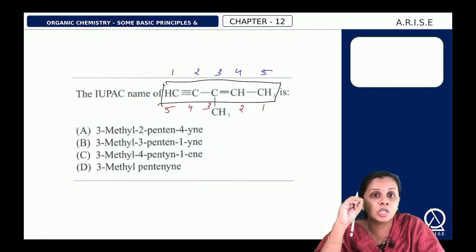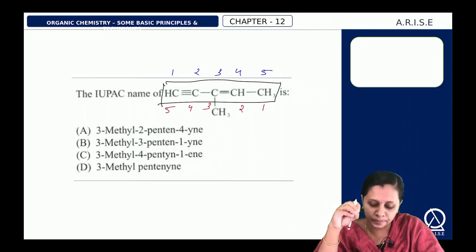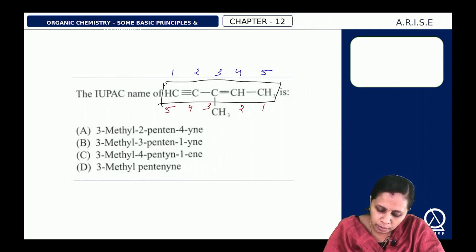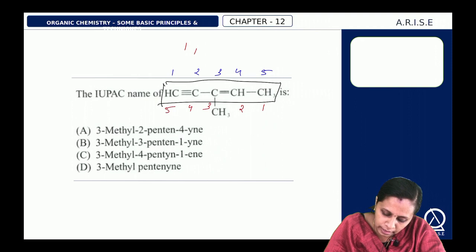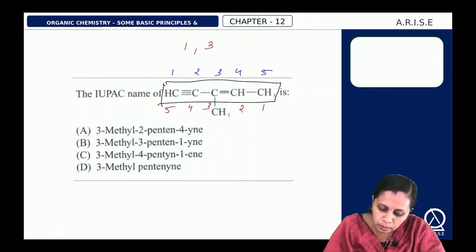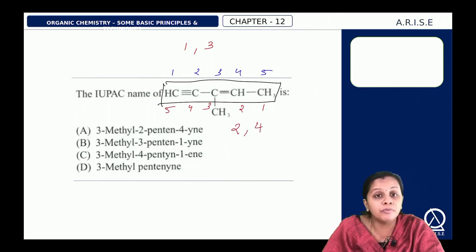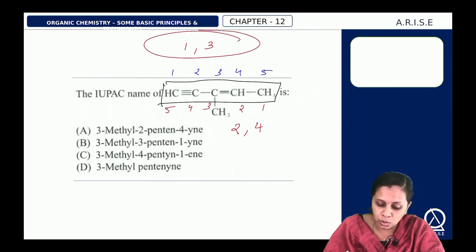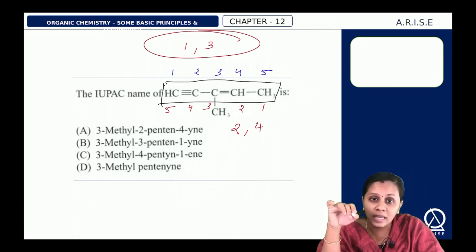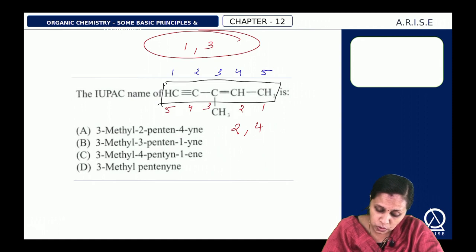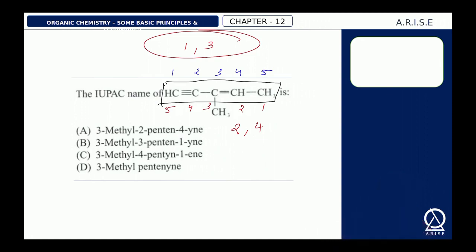You have to give importance to the functional group — there is an alkene and an alkyne group. When numbering from the left side, the triple bond starts at carbon 1 and the double bond starts at carbon 3 (or 2). Numbering from the right, the double bond starts at carbon 2 and the triple bond at carbon 4. So 1 and 3 positions are chosen, numbering from the left. There is one substituent: 3-methyl. Five carbons in the chain gives the word root 'pent'.